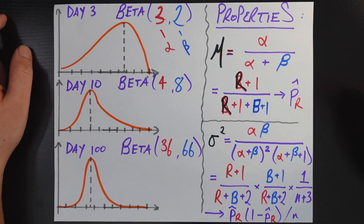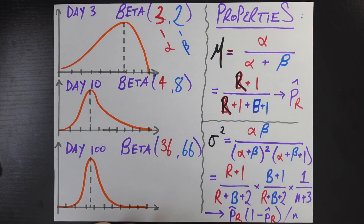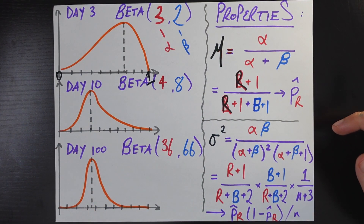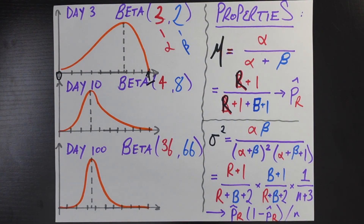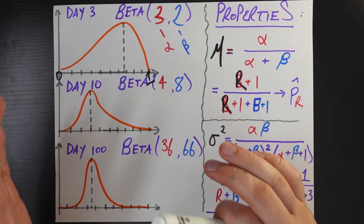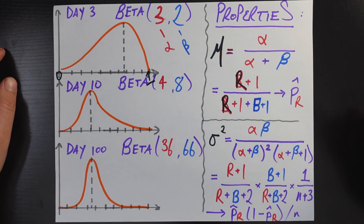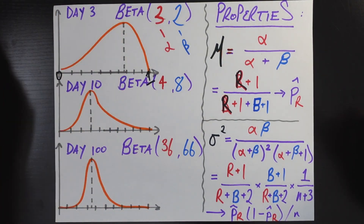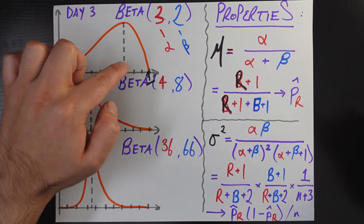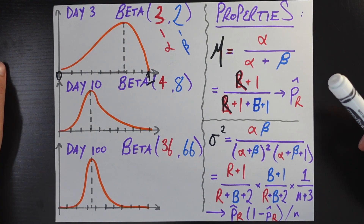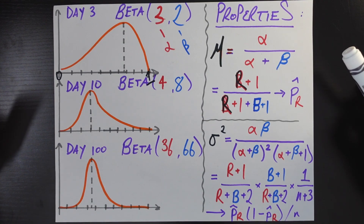What does a Beta(3, 2) distribution look like? On the left axis we have zero and over here we have one, so we see that the first criteria is met — there is no density to the left of zero or to the right of one. As a teaser for why things are looking good, if we calculate the mode of this distribution — the peak, where the gray dashed line is — the mode is 0.67, which is exactly the sample proportion itself. The most likely value of this distribution is the empirical proportion of times the professor has worn red shoes.